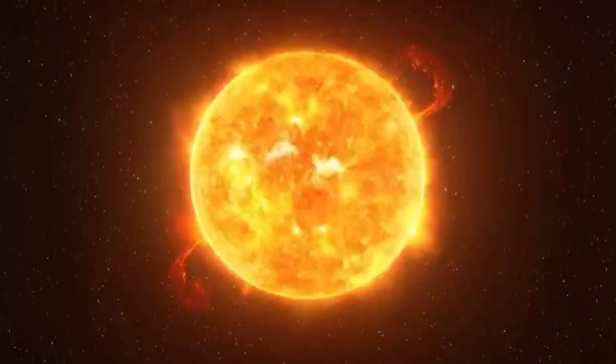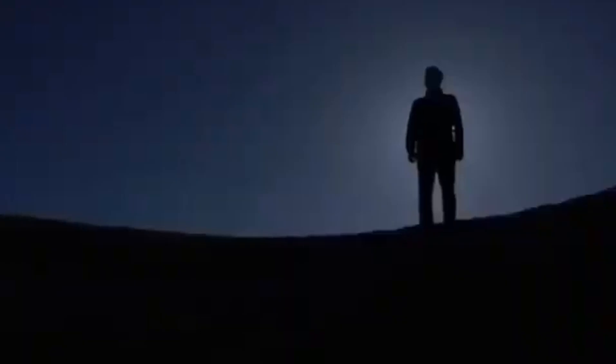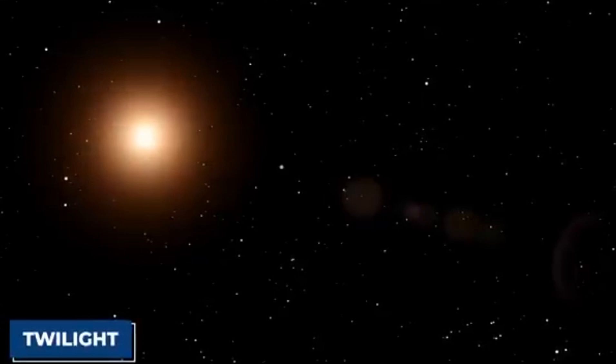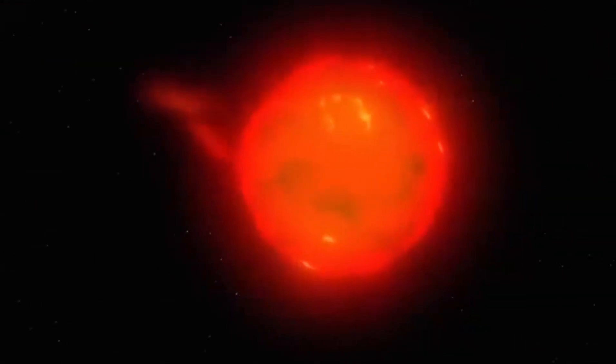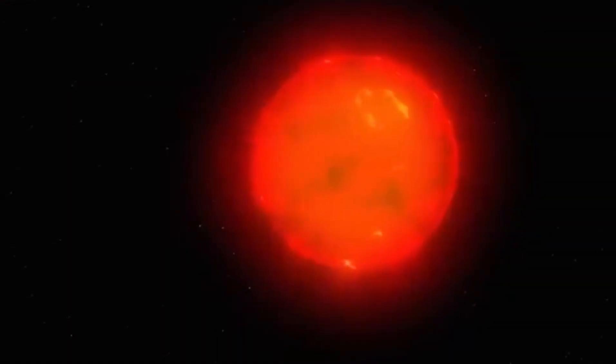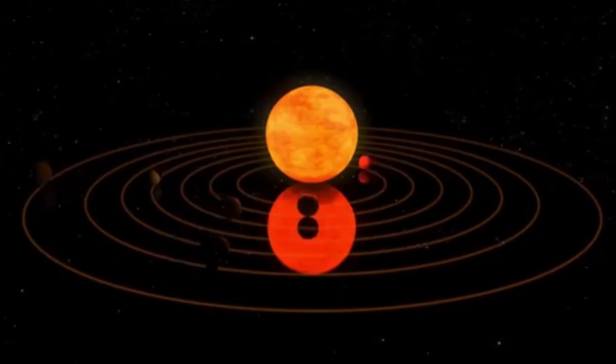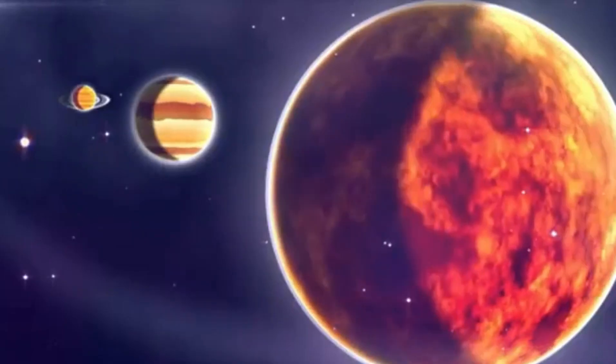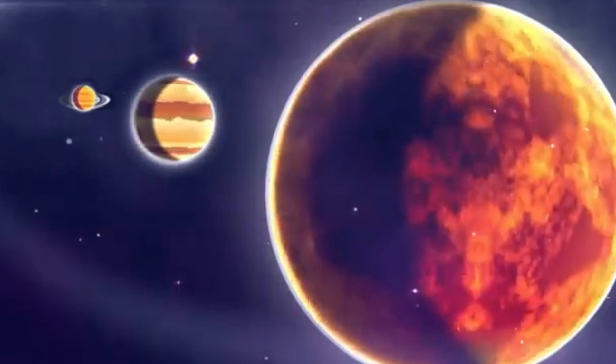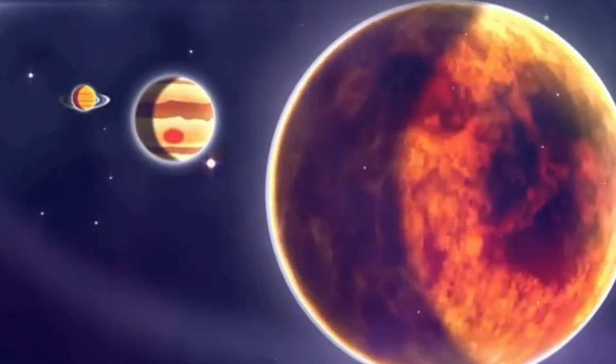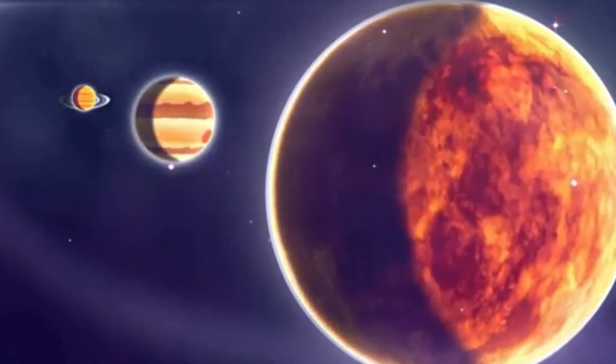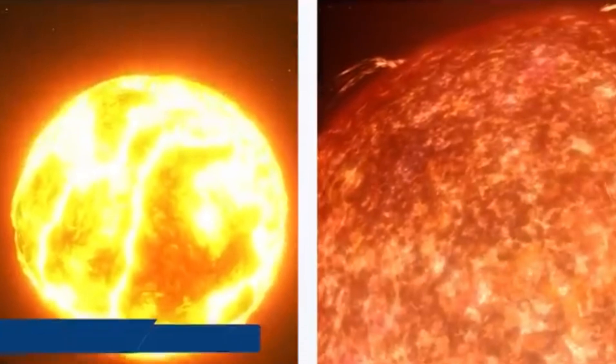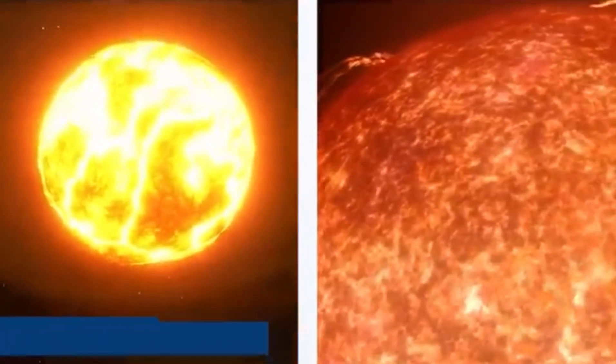This star is Betelgeuse, a red supergiant of immense proportions and age, situated conspicuously in the constellation Orion. Its distinctive reddish hue and variable brightness have long been a source of intrigue, but recent developments have intensified interest in this celestial giant. As we explore the nature of Betelgeuse, we find ourselves on the cusp of a potentially monumental event. But what could these changes signify? Are we witnessing the prelude to a cosmic spectacle of unimaginable scale?